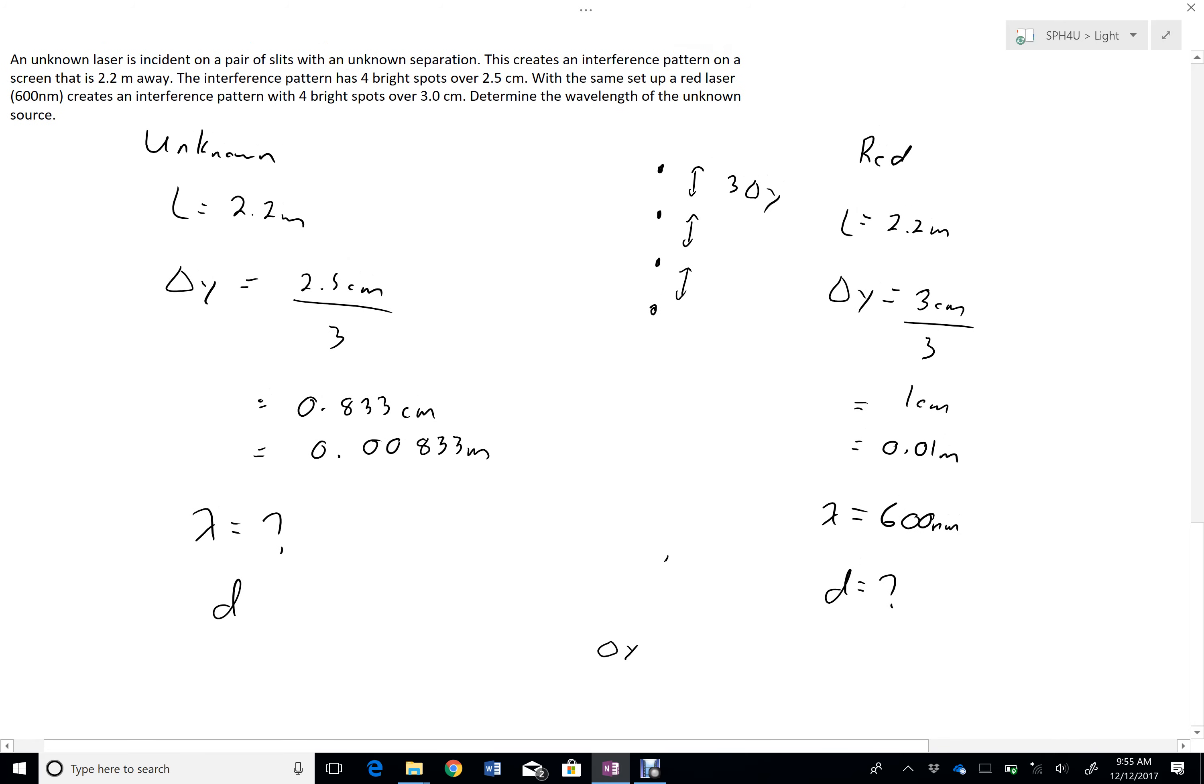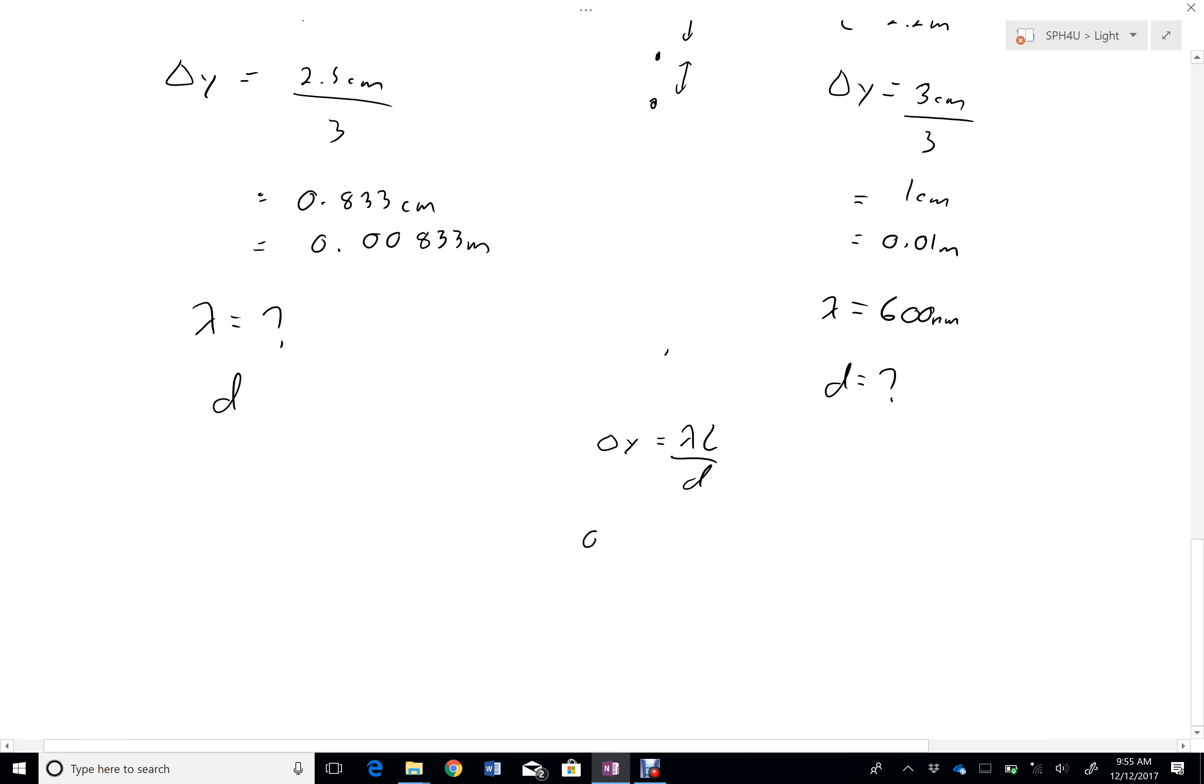And then I'll show you a different way to do it in a second. So delta Y equals lambda L over D. So 0.01, actually I'm going to solve this for D first.